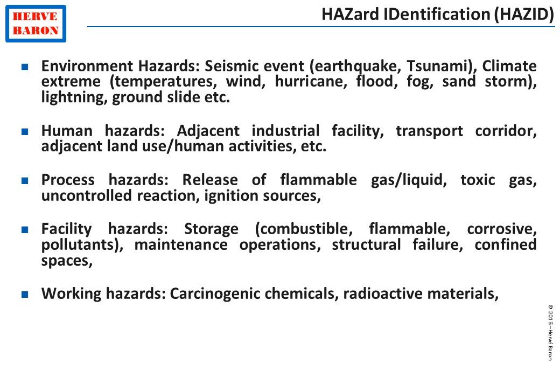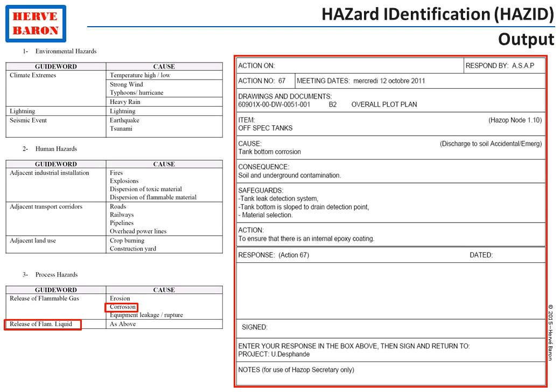Finally, the hazards for the working personnel due to the substance being handled. If any of these hazards are identified as a potential threat for the particular facility, a Hazard Action Sheet is issued to the engineer. The Hazard Action Sheet identifies the hazard and requests an answer from the engineer that this hazard has been taken into account. It could also provide a more specific recommendation.